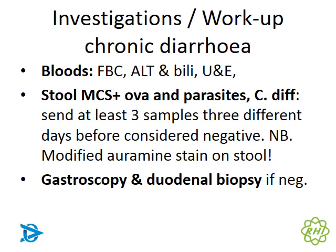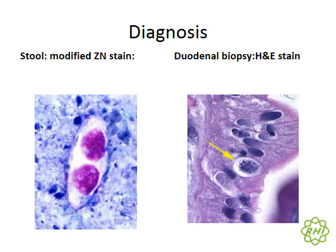If multiple stool samples come back negative, take the next step toward a definitive diagnosis — consider a gastroscopy or duodenal biopsy depending on the clinical picture. Two diagnostic methods are shown: on the left, a stool sample with modified Ziehl-Neelsen stain showing a Cystoisospora belli oocyst (formerly isosporiasis); on the right, an immature oocyst within a duodenal biopsy confirming the diagnosis.